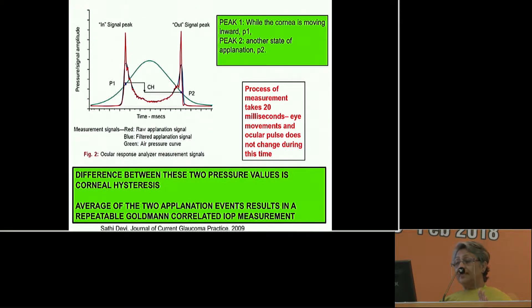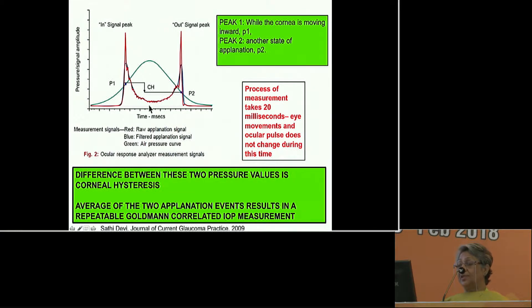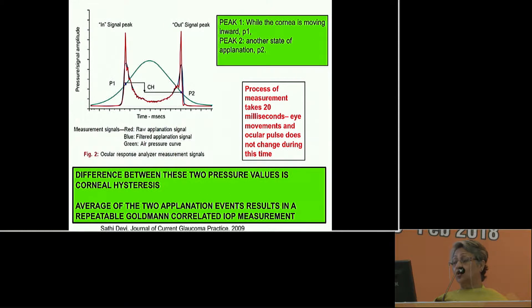The difference between P1 and P2 — the two applanation events — is corneal hysteresis. An average of these two applanation events results in a repeatable Goldman-correlated IOP measurement.